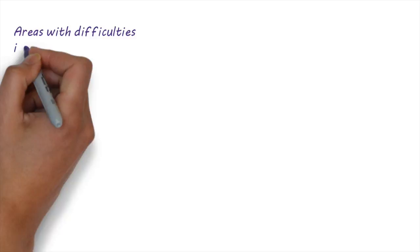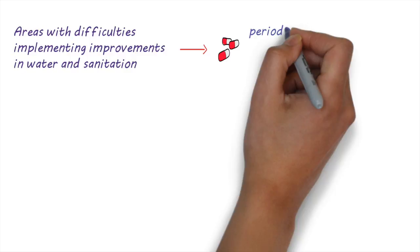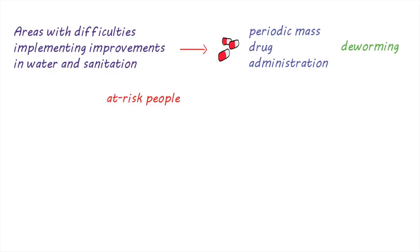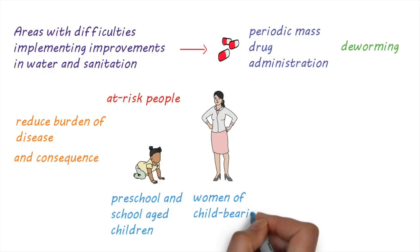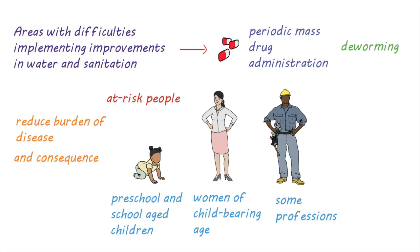In parts of the world where there are difficulties implementing large-scale improvements in water and sanitation, periodic mass drug administration — also called deworming — for at-risk people has been very effective. This can reduce the burden of disease and the consequences of infections. At-risk people include preschool and school-age children, women of childbearing age, and people in certain occupations such as tea pickers or miners. Deworming is usually done once or twice a year depending on how common the disease is in those communities.